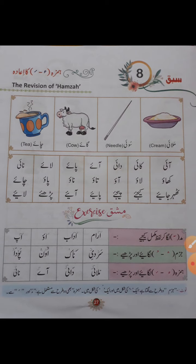اس میں جو حمزہ اگر چھوٹی یہ کے ساتھ ملے گا اور زیر لگے گا تو ای کی آواز نکلے گی۔ اور اگر بڑی یہ کے ساتھ لگے گا تو بھی ایک ہی آواز نکلے گی — جیسے علیزہ، کا حمزہ، زیر، اے، گائے۔